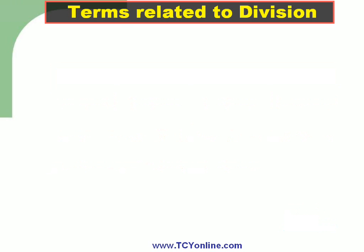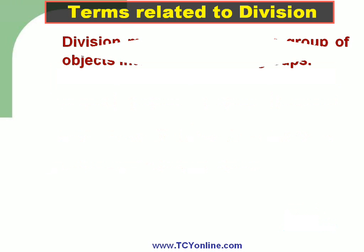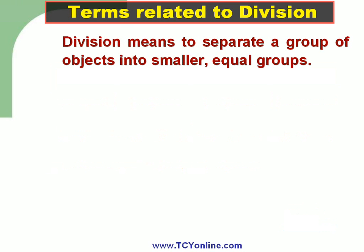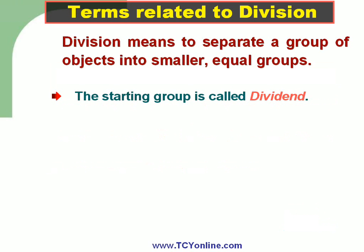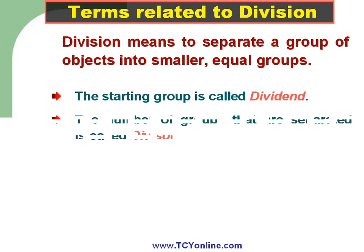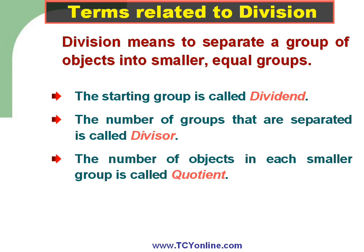Now let's look at a few terms related to division. Division means to separate a group of objects into smaller equal groups. The starting group is called the dividend. The number of groups that are separated out is called the divisor. The number of objects in each smaller group is called the quotient — so when two numbers are divided, the answer we get is the quotient.